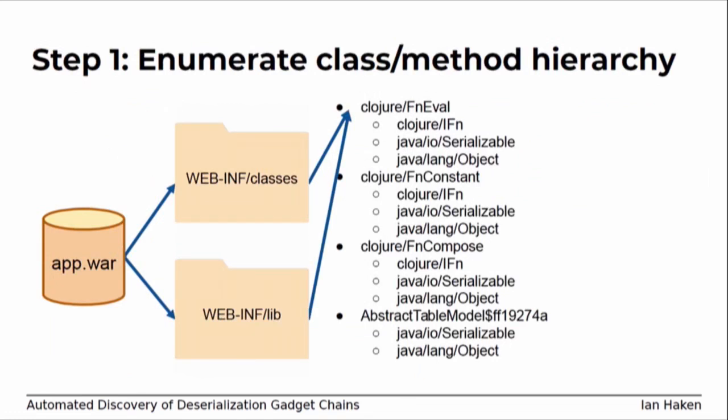So the first step is just enumerating everything on your class path. You want to figure out the whole class hierarchy and all the method hierarchies, so that when you see something calling a method from one magic method — like HashMap calling hashCode — you know what all the implementations of hashCode are that you might jump to. You can use the plain old Java reflection APIs to do that. It's not terribly difficult, but it's an important first step for the rest of the analysis.